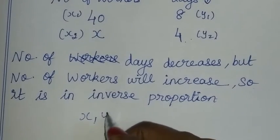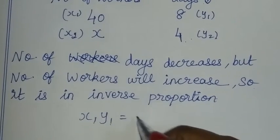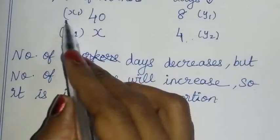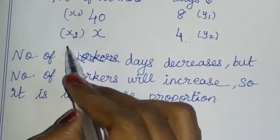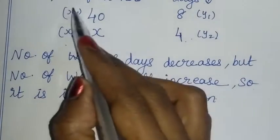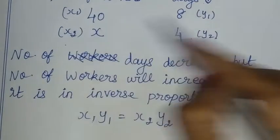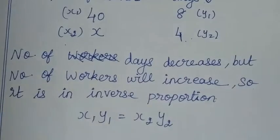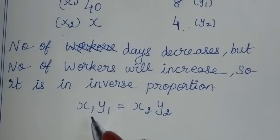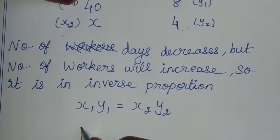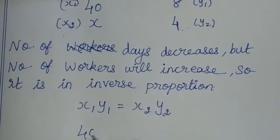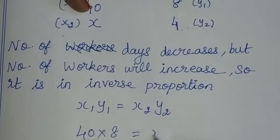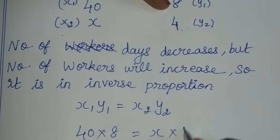That formula is x1·y1 = x2·y2. One quantity is number of workers. x1 is 40, y1 is 8 days, and we need to find x for 4 days. So 40 into 8 is equal to x into 4.